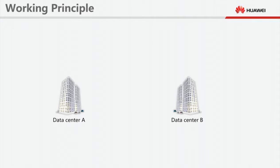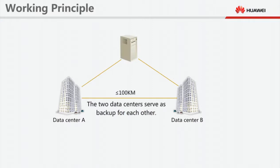Working principle. HyperMetro enables storage arrays in two data centers to work concurrently and share service loads, providing you with a high availability data protection solution. The distance between the two data centers can be as far as 100 kilometers. The two data centers serve as backup for each other.